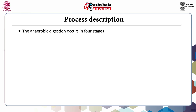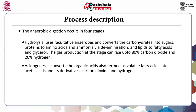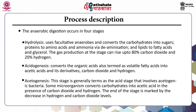In the hydrolysis phase, facultative anaerobes convert carbohydrates into sugars, proteins to amino acids and ammonia via deamination, and lipids to fatty acids and glycerol. Gas production at this stage can reach up to 80% carbon dioxide and 20% hydrogen. Acidogenesis converts the organic acids formed — volatile fatty acids — into acetic acids and derivatives, along with generation of carbon dioxide and hydrogen. The acidogenic bacteria are involved, and the end of this stage is marked by a decrease in hydrogen and carbon dioxide levels.